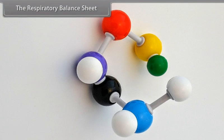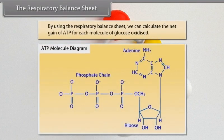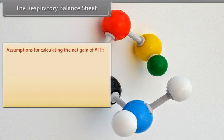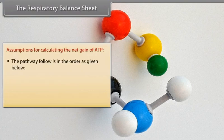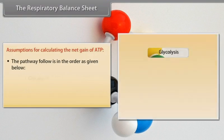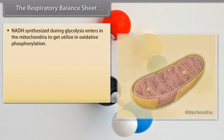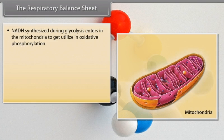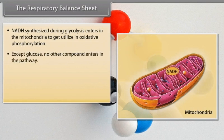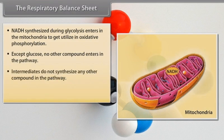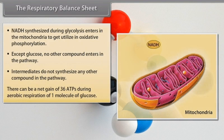The respiratory balance sheet allows us to calculate the net gain of ATP for each molecule of glucose oxidized. Assumptions for calculating the net gain of ATP: the pathway followed is glycolysis, TCA cycle, and electron transport system; NADH synthesized during glycolysis enters the mitochondria to get utilized in oxidative phosphorylation; except glucose, no other compound enters the pathway; and intermediates do not synthesize any other compound. There can be a net gain of 36 ATPs during aerobic respiration of one molecule of glucose.